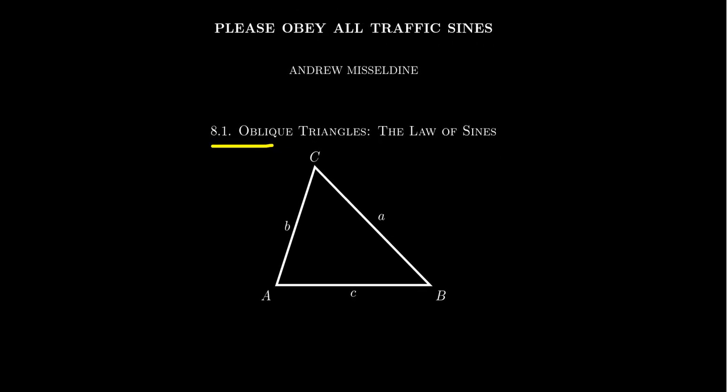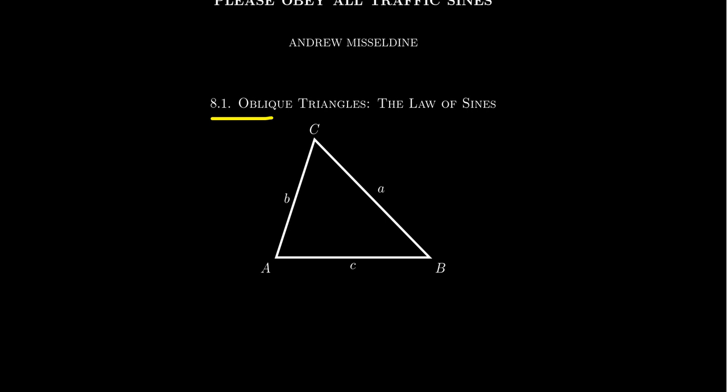What do we mean by that? Well, in this trigonometry course, very early on, we studied triangles. Specifically, Chapter 2 was focused on solving right triangles. In Chapter 8, we're going to return to the study of triangles. But up to this point, we've essentially only studied right triangles — there was an occasional equilateral or isosceles triangle, but for the most part, almost exclusively, we've been studying right triangles. In this chapter, we're going to study non-right triangles, which are called oblique triangles — triangles where we don't have a right angle.